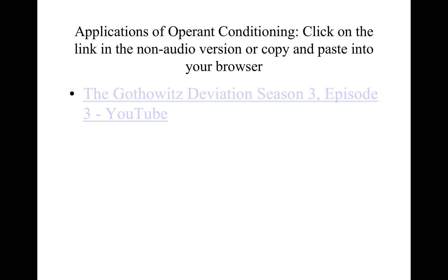As an application of operant conditioning, you can copy and paste into YouTube the following: 'The Gotthowitz Deviation' — Gotthowitz is spelled G-O-T-H-O-W-I-T-Z, Deviation D-E-V-I-A-T-I-O-N — Season 3, Episode 3. It's a clip from a popular show that demonstrates how to use operant conditioning.